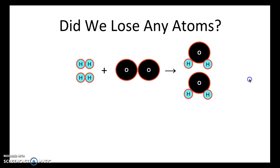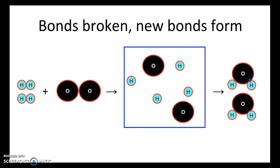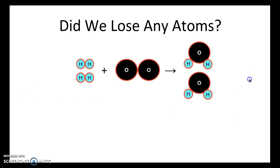Now that we've talked about bonds being broken and new bonds being formed, let's take a look at whether we lose any atoms. We can see that in this balanced chemical equation. Did we lose any atoms? When they broke apart and reformed, did we lose any? On the reactant side, we have four hydrogen atoms and two oxygen atoms.